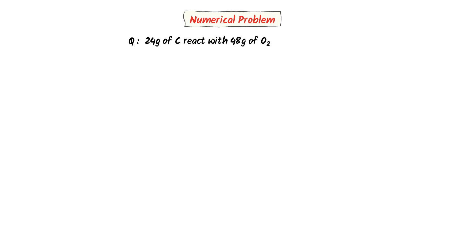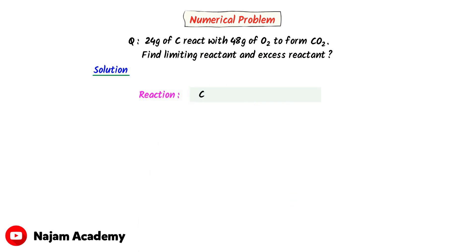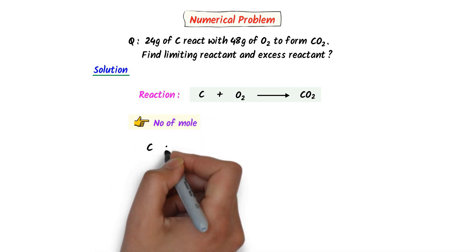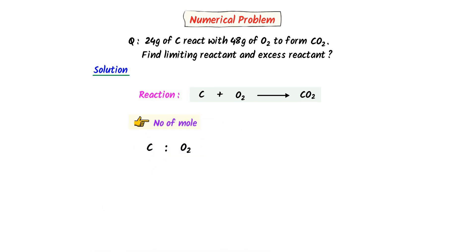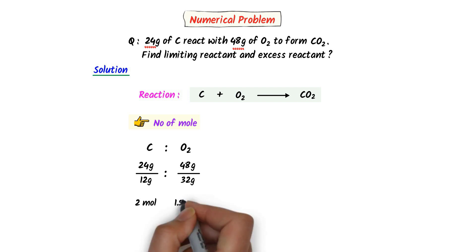Now consider the second numerical problem: 24 grams of carbon react with 48 grams of oxygen gas to form carbon dioxide gas. Find the limiting reactant and excess reactant. I write: carbon plus oxygen gas react together to form carbon dioxide gas. According to the trick, in the first step, I find the number of moles of carbon and oxygen. The given mass of carbon is 24 grams and the molar mass of carbon is 12 grams — after calculation, I get 2 moles. The given mass of oxygen is 48 grams and its molar mass is 32 grams — after calculation, I get 1.5 moles.